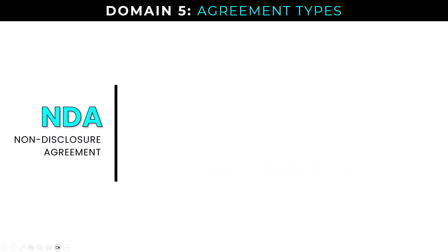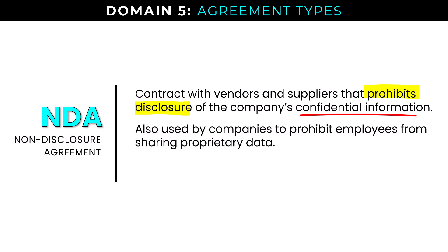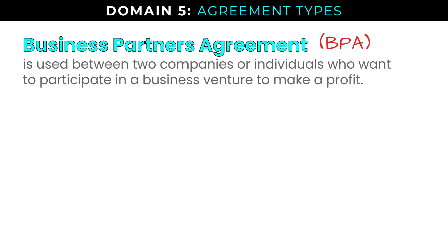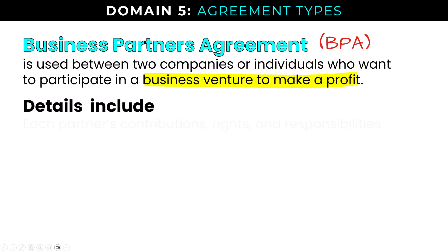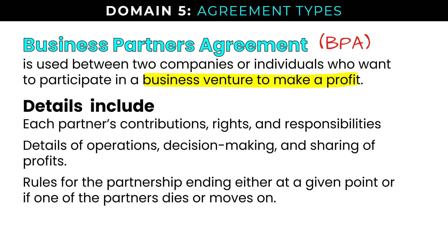The Non-Disclosure Agreement or NDA is a contract prohibiting disclosure of the company's confidential information, also used to prohibit employees from sharing proprietary data. Duration and terms may vary, so an NDA should be entered into with considerable care. The Business Partners Agreement or BPA is used between two companies or individuals participating in a business venture to make a profit, covering each partner's contributions, rights, responsibilities, details of operations, decision-making, sharing of profits, and rules for the partnership ending, whether at a given time, based on an event, or if one of the partners dies or moves on.